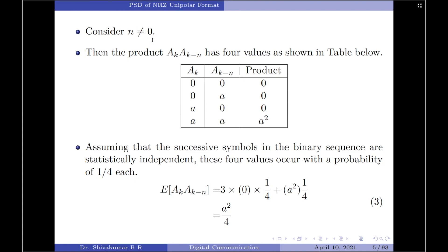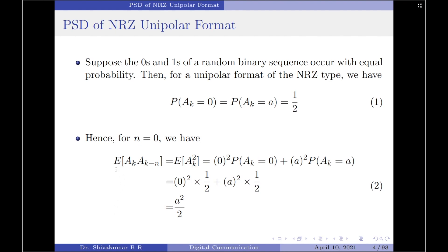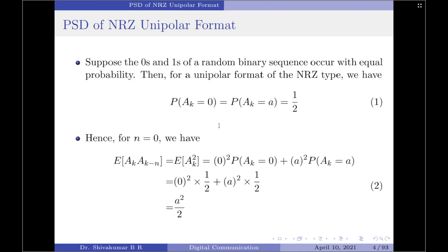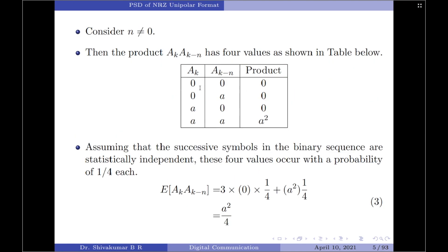When n ≠ 0, we evaluate E[ak · a(k−n)]. Since this is a two-bit combination product, there are four possible values based on ak and a(k−n). Starting from combination 0,0 and ending with 1,1 — since amplitudes are 0 and A, wherever we expect 0 we put 0, and wherever we expect 1 we put A — giving products: 0·0=0, 0·A=0, A·0=0, and A·A=A².